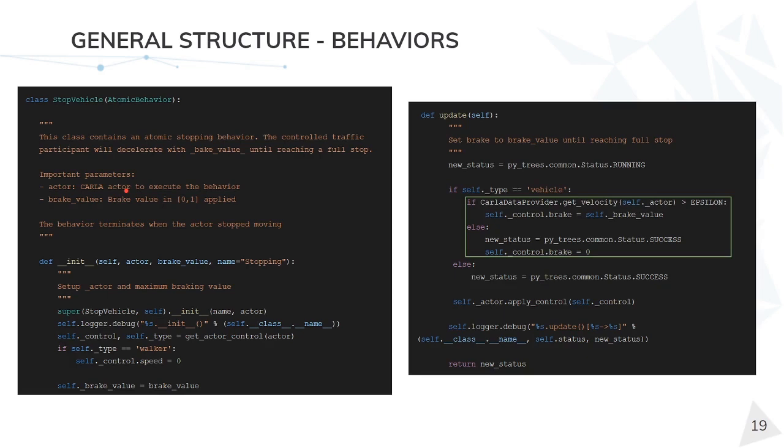This specific behavior, as its name implies, completely stops the vehicle. To do so, we just have two parameters: the actor, which is the actor will be stopping, and a brake value. This brake value will be passed to the control and is the force with which the brake will happen.